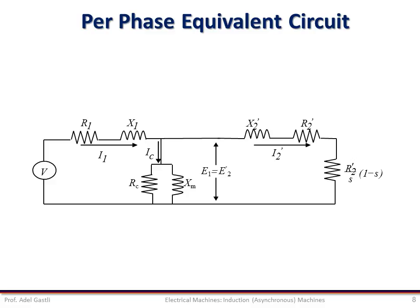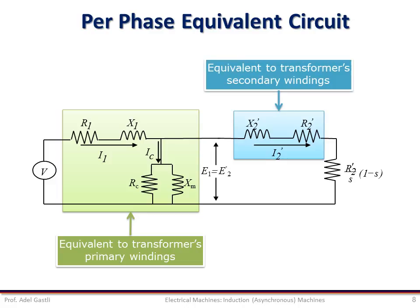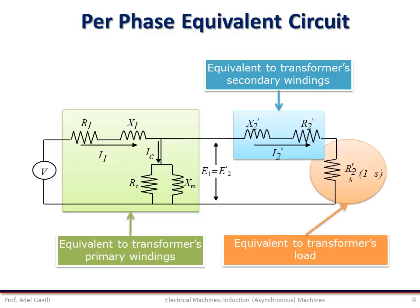Each part of this equivalent circuit represents one actual part of the machine. This part represents the stator winding, equivalent to the transformer primary winding. This part represents the rotor, equivalent to the transformer secondary winding. Finally, this part represents the mechanical load, equivalent to the transformer electric load. There is a remarkable analogy between the equivalent circuit of the transformer and the induction motor.